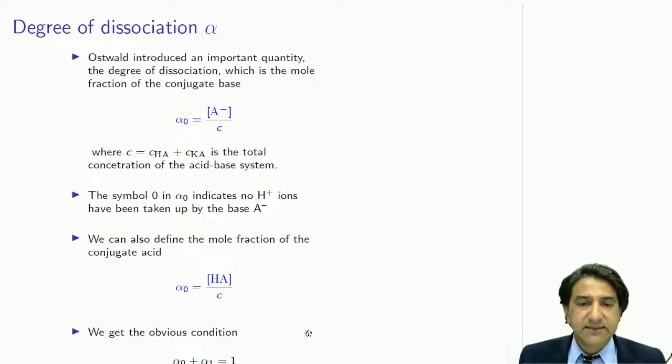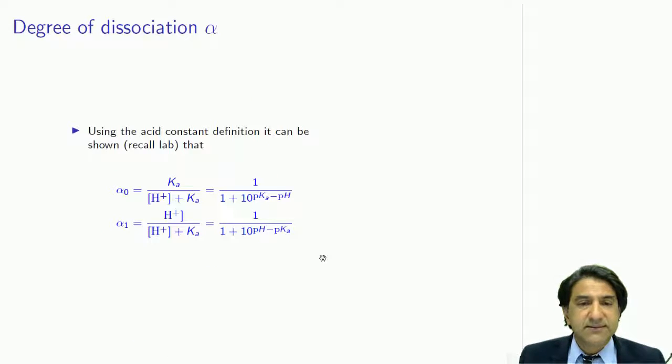Now you can easily see that alpha-0 plus alpha-1 equals 1. Why is that? Well, you can check it. We can check it by algebra. I'll give you a hint. The reason for that arises from mass balance. Have a look at one of the previous lectures to figure that out.